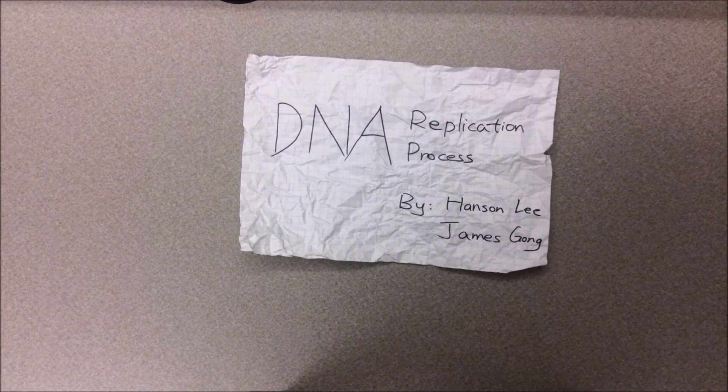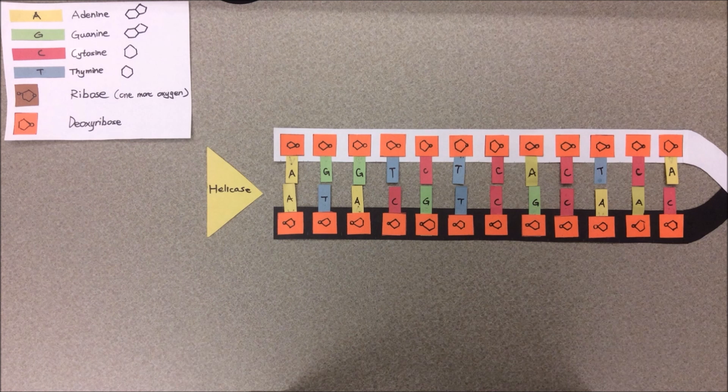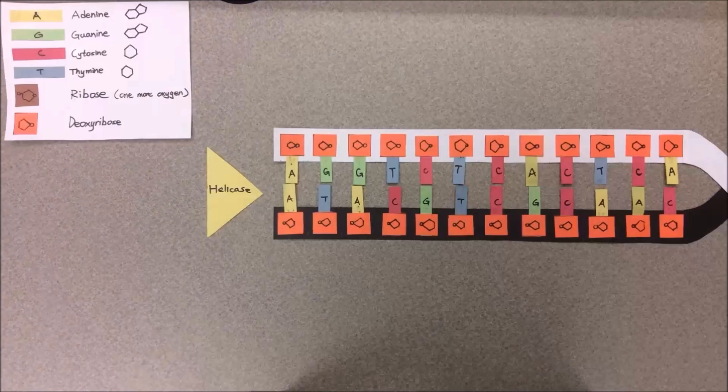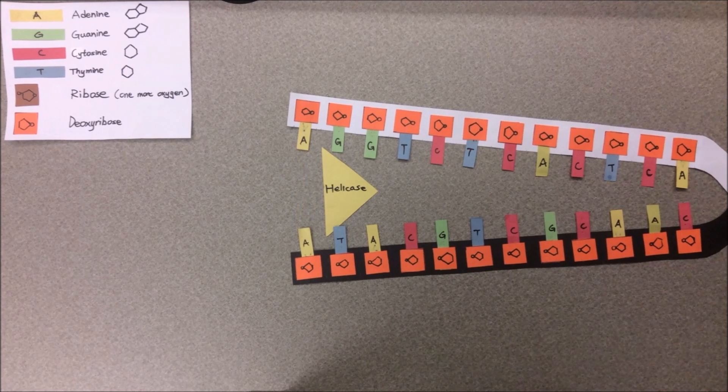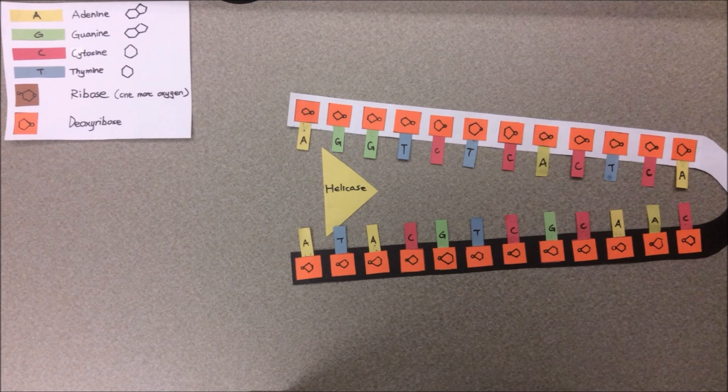DNA replication by James and Hansen. The first thing that happens in DNA replication is the unzipping of the double helix structure of the DNA strand. An enzyme called helicase is responsible for this and does so by breaking the hydrogen bonds holding the complementary bases of DNA together.